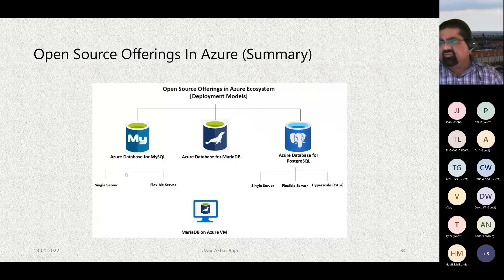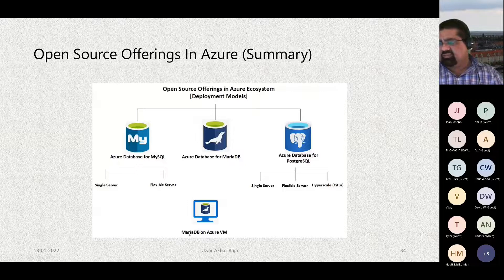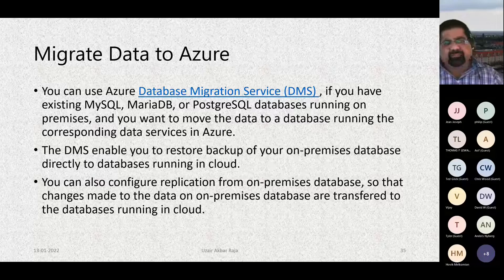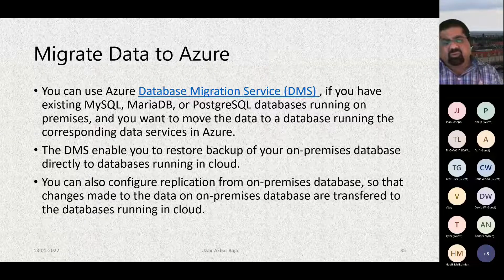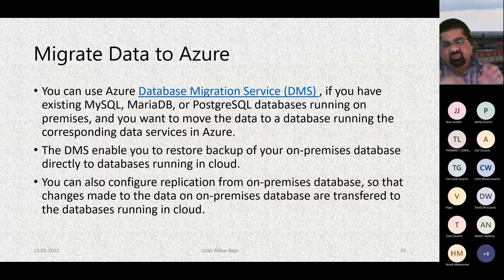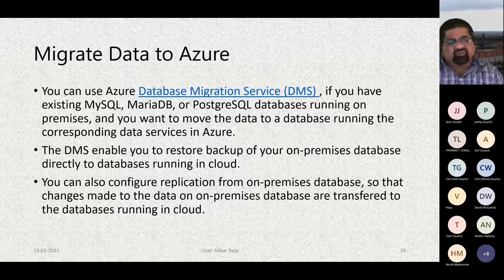In summary, Azure open source offerings include Azure Database for MySQL, Azure Database for MariaDB (with a VM option), and Azure Database for PostgreSQL available in single server, flexible server, and Hyperscale. The Azure Database Migration Service helps migrate on-premise MySQL, MariaDB, and PostgreSQL to the cloud, with minimal downtime through continuous data sync during migration.